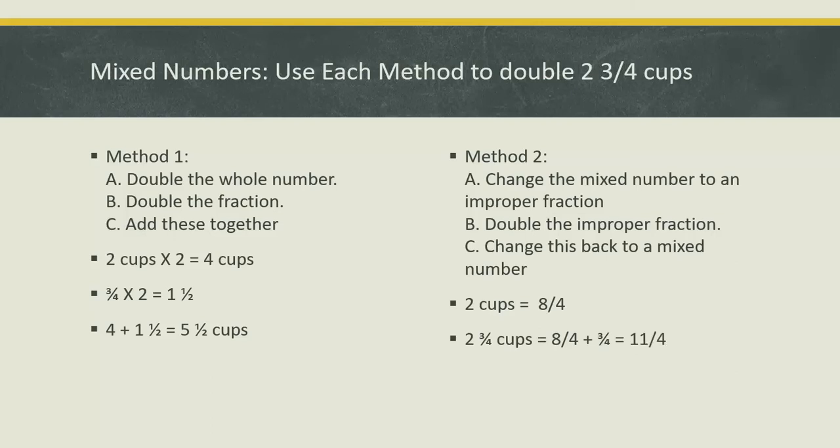Now let's double eleven-fourths. So eleven-fourths times two over one. Eleven times two is twenty-two. Four times one is four. Again, I have an improper fraction.